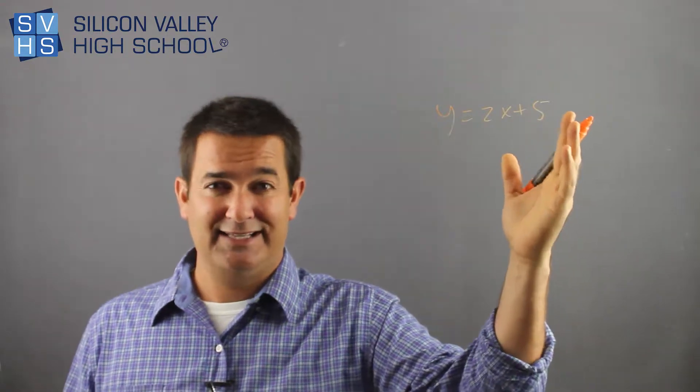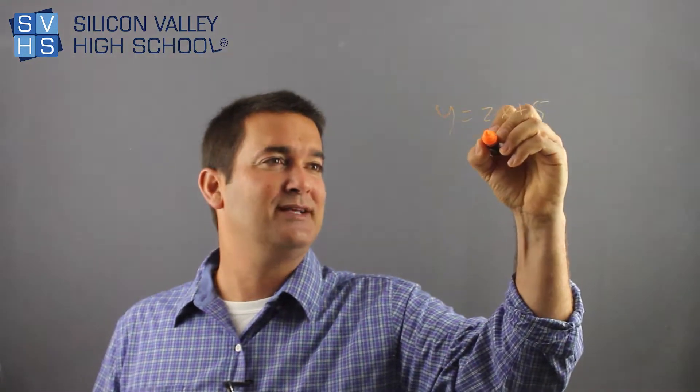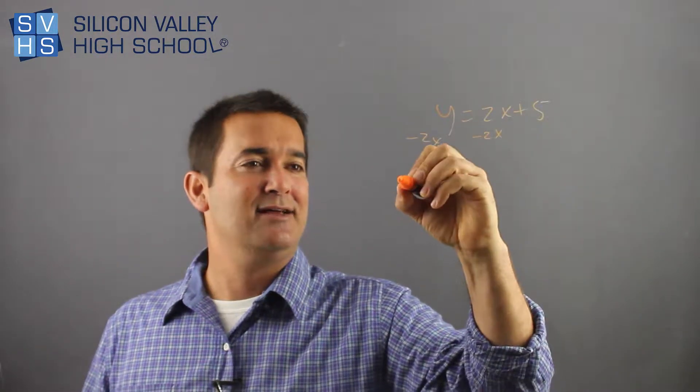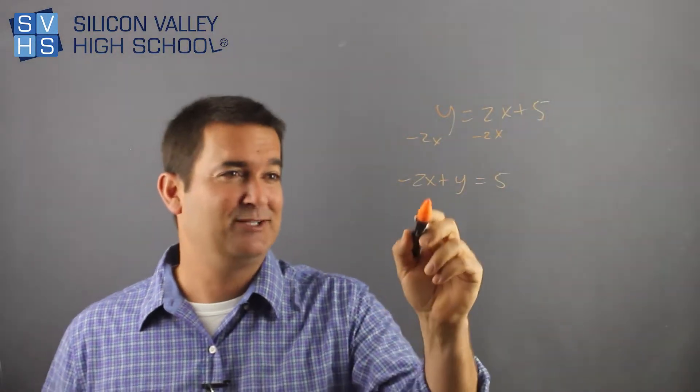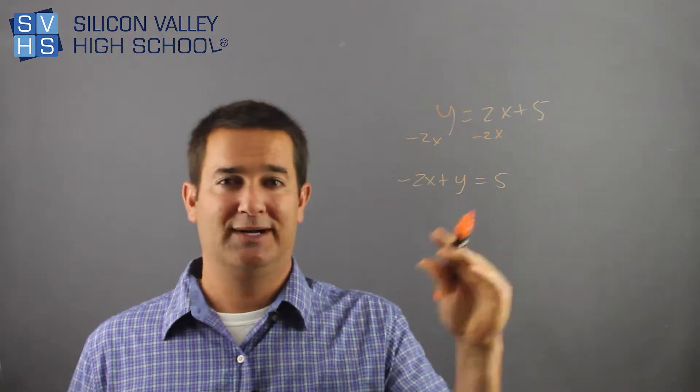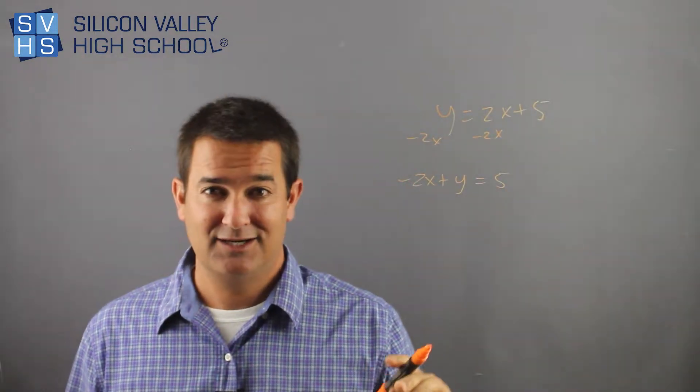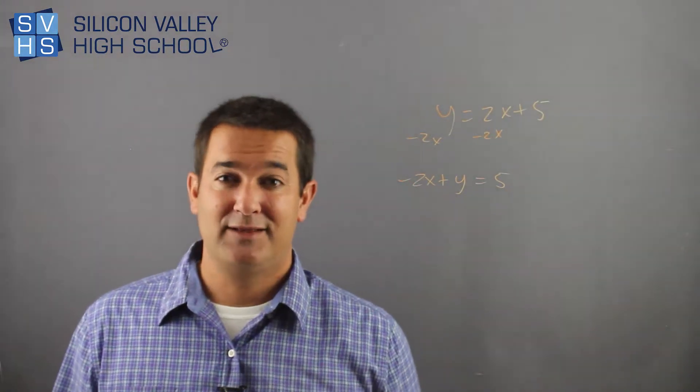You're going to get the x to the right side, so you're going to say minus two x, minus two x. Negative two x plus y equals five. They don't add because they're not like terms. You can't just make that like negative two x y. So now I'm done, right? There's only one issue.